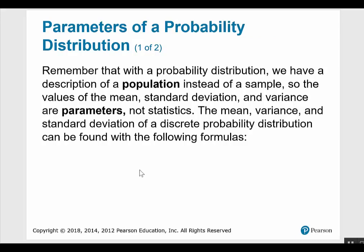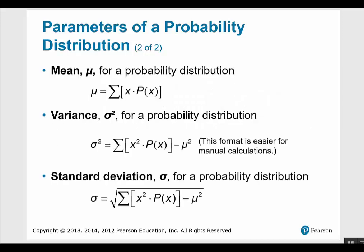Parameters of a probability distribution. Remember that with a probability distribution, we have a description of a population instead of a sample, so the values of the mean, standard deviation, and variance are parameters, not statistics. The mean, variance, and standard deviation of a discrete probability distribution can be found with the following formulas. The mean is the sum of each x times its probability. The variance sigma squared is given by the formula in your charts table. The standard deviation sigma is simply the square root of the variance.